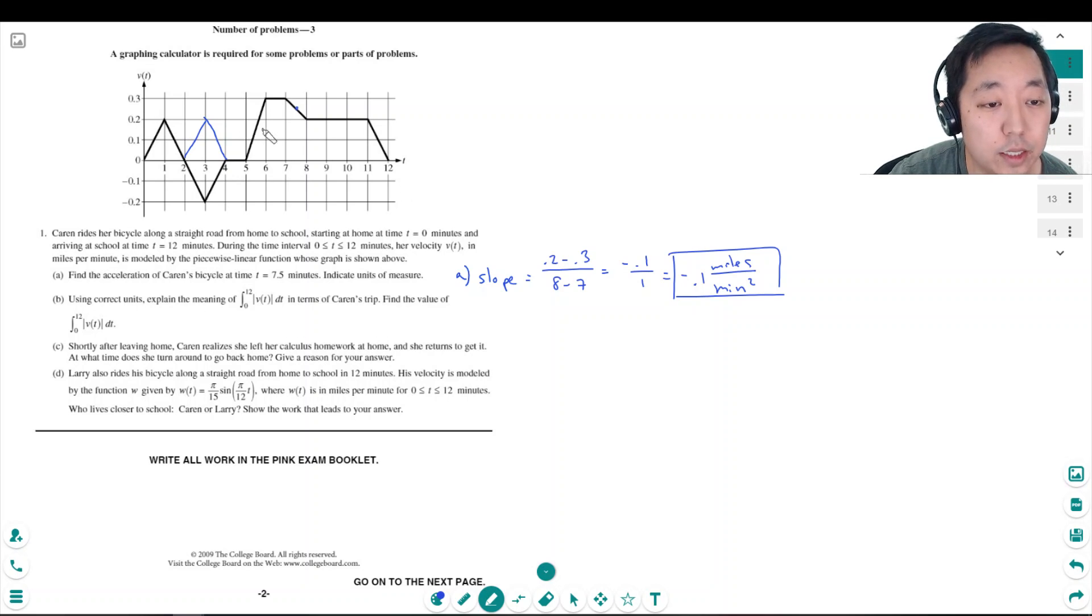And to find this total, the integral of this curve would be the area under the curve. So I've got to find the area of each of these shapes. So let's see.